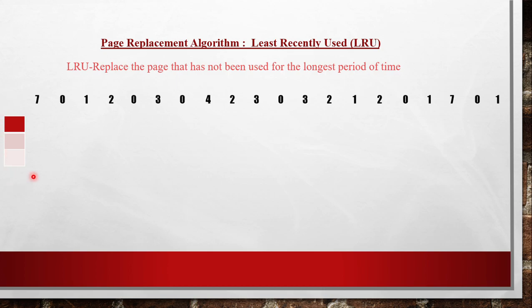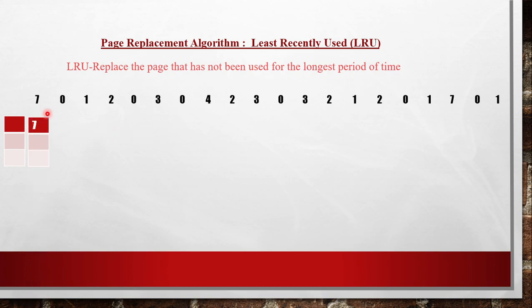In real life, it may be more or less than 3 frames. Coming back to the simulation: the first page reference by CPU is 7. We need to bring page 7 to main memory. We should check whether page 7 is present or not. It is not present, so we consider this the first page fault and bring page 7 to main memory into frame 1.